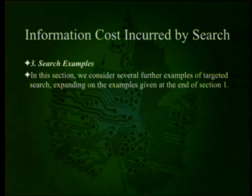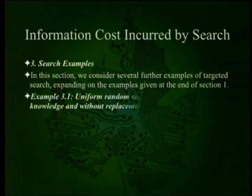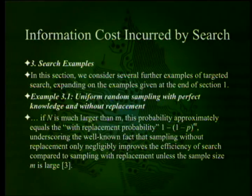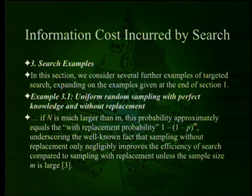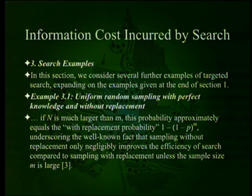Search examples section considers uniform random samples with perfect knowledge and without replacement. If n is much larger than m, this probability approximately equals the with-replacement probability: 1 minus (1 minus p) to the m — again a standard log form. This underscores the well-known fact that sampling without replacement only negligibly improves the efficiency of search compared with sampling with replacement unless the sample size m is large.